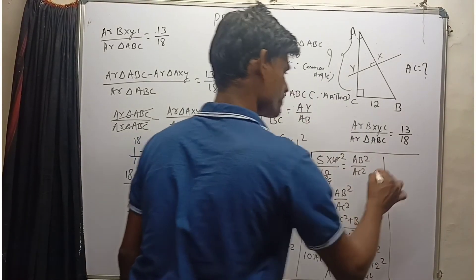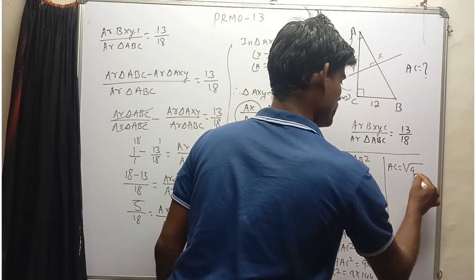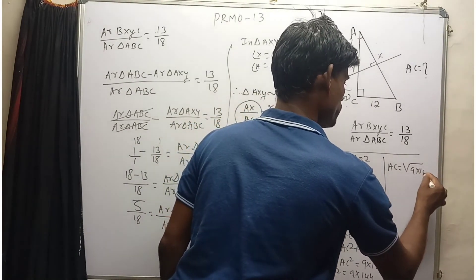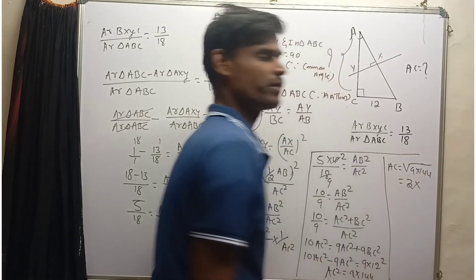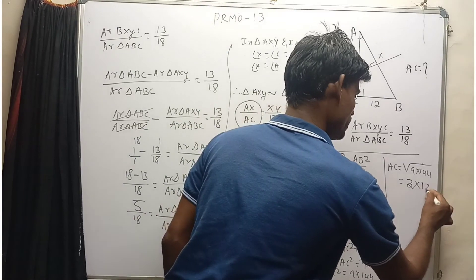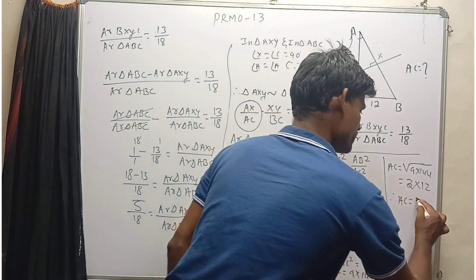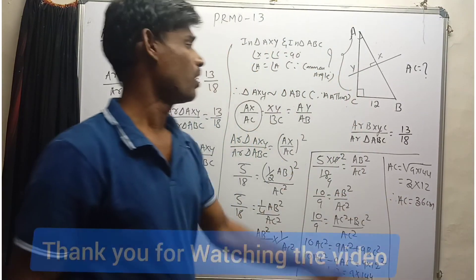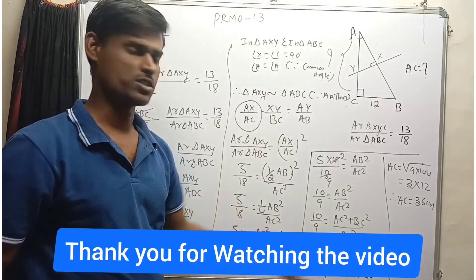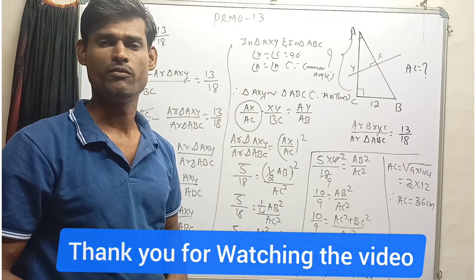Therefore, AC equals the square root of 9 times 144, which equals 3 times 12. Therefore, the length of AC equals 36 centimeters. I hope you got the solution. Thank you for watching the video.